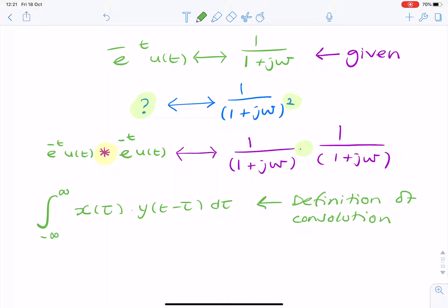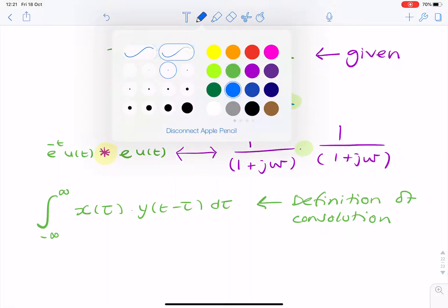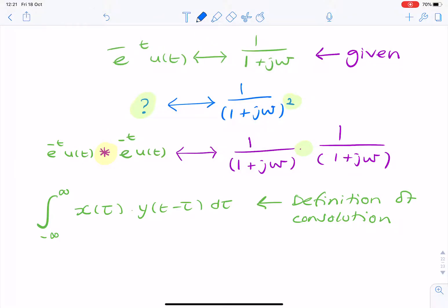Okay, so now we simply replace x and y with our two functions. So, we have e to the power minus tau times u of tau multiplied by e to the power minus t minus tau multiplied by u of t minus tau.